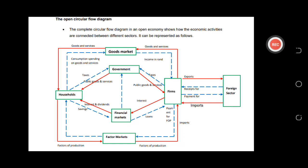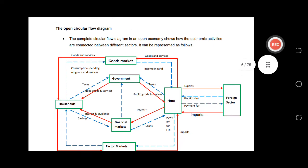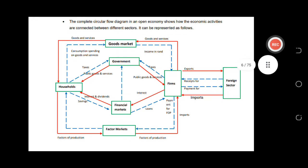This diagram also shows a foreign sector because it's an open economy. Under an open economy you don't have to ignore the foreign sector — please make sure you also show it. However, if they say a closed economy, please don't show a foreign sector because they will penalize you when they mark.